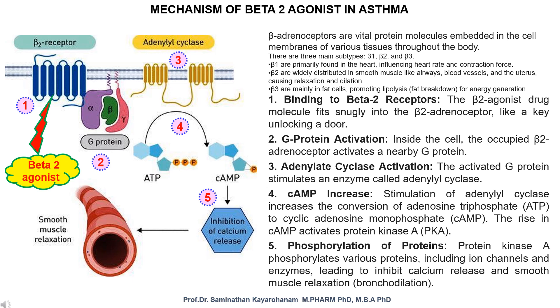Step 1: binding to beta 2 receptors. The beta 2 agonist drug molecule fits snugly into the beta 2 adrenoceptor, like a key unlocking a door.